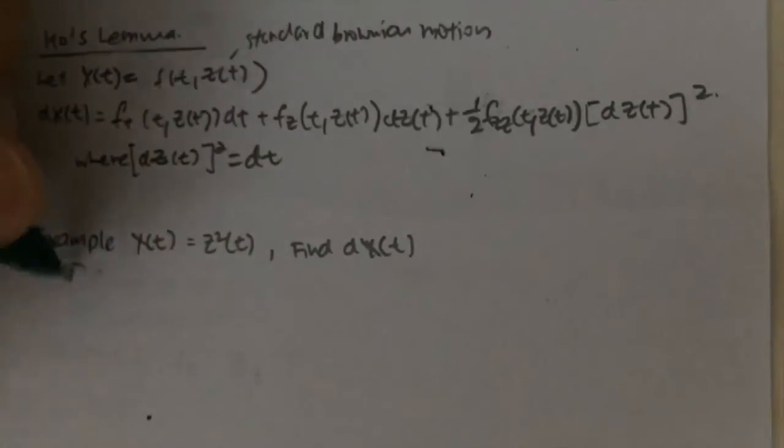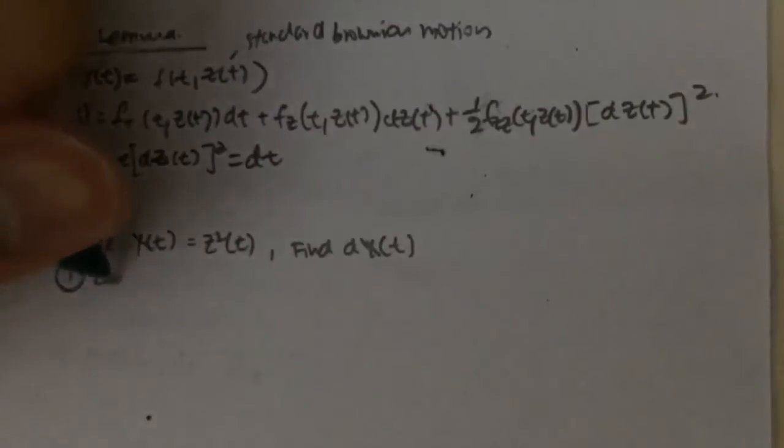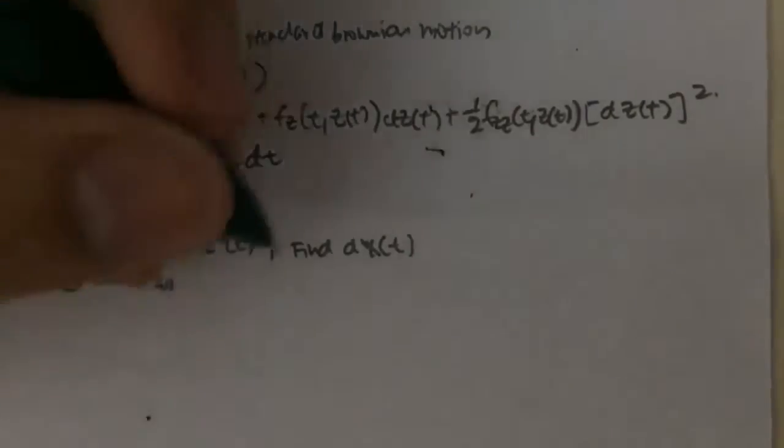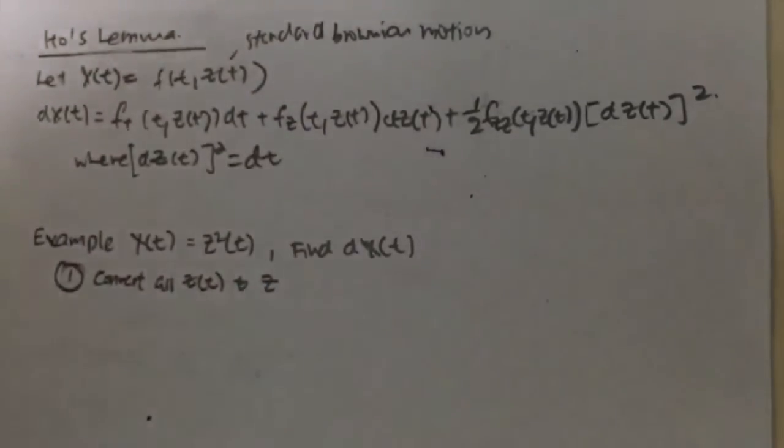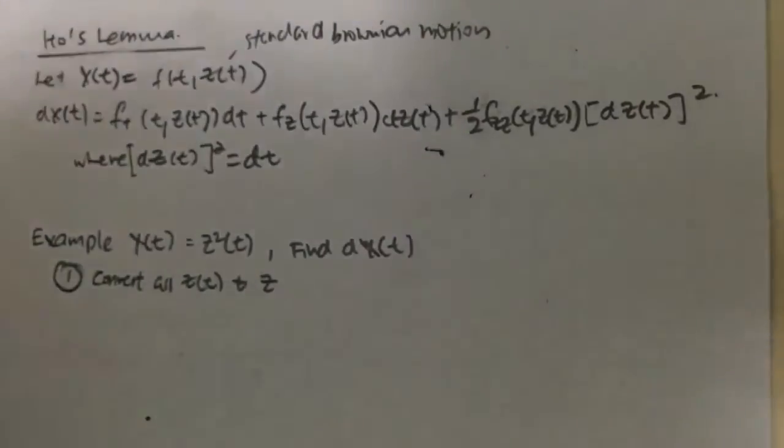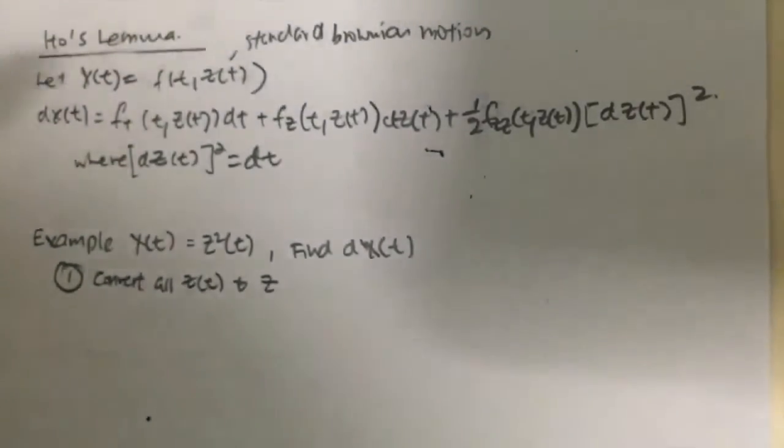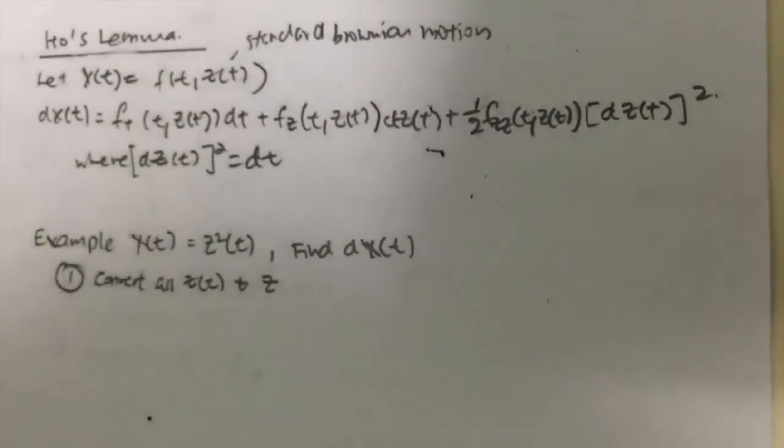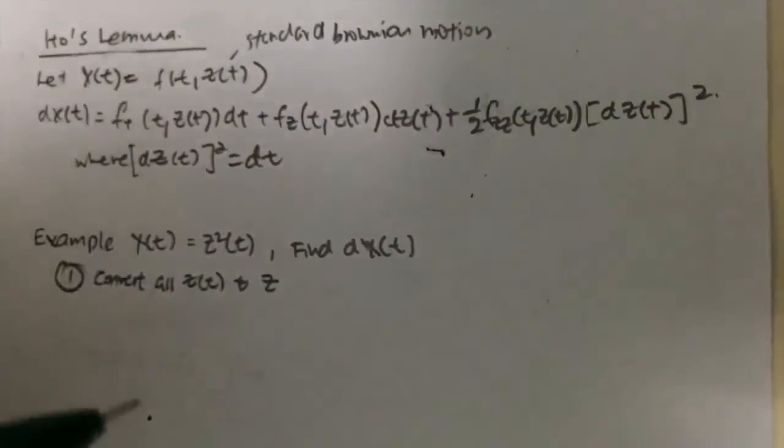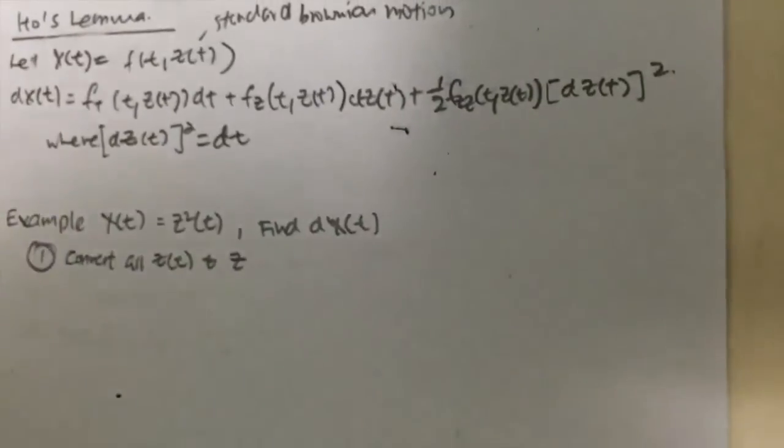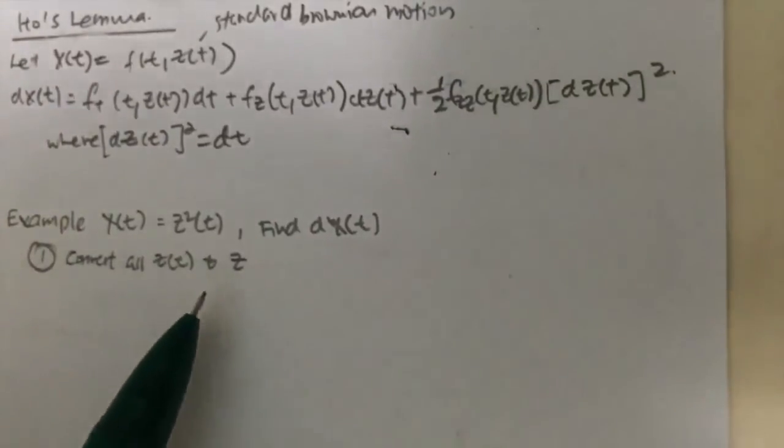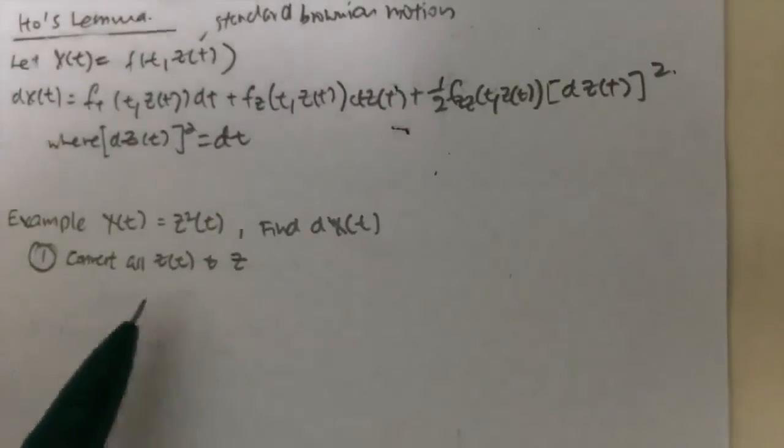In order to solve this problem, first thing that we need to do is to convert all Z(t) to Z. Basically, Z(t) is the random variable at time t, while Z itself is just a random variable. So the reason why we convert it to Z is because we want to simplify the equation. But in the end of the solution, we will convert Z back into Z(t).